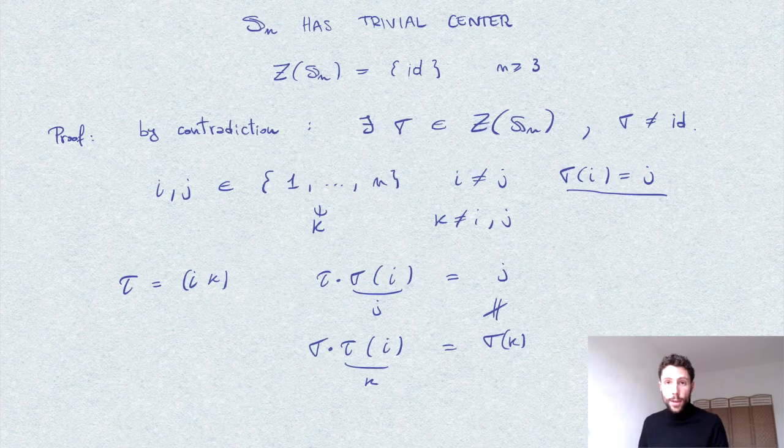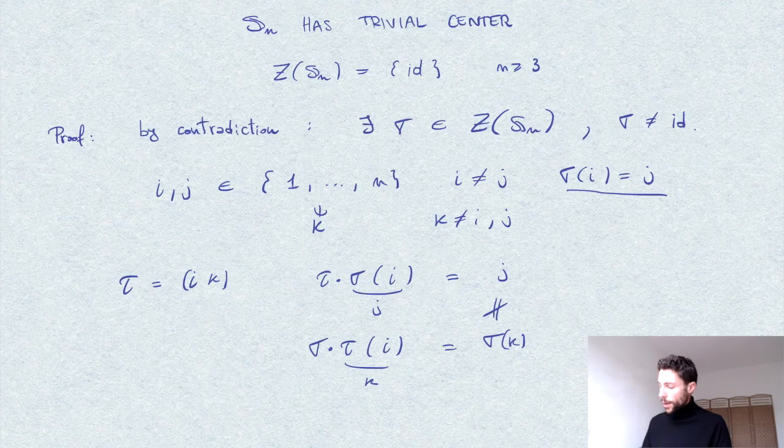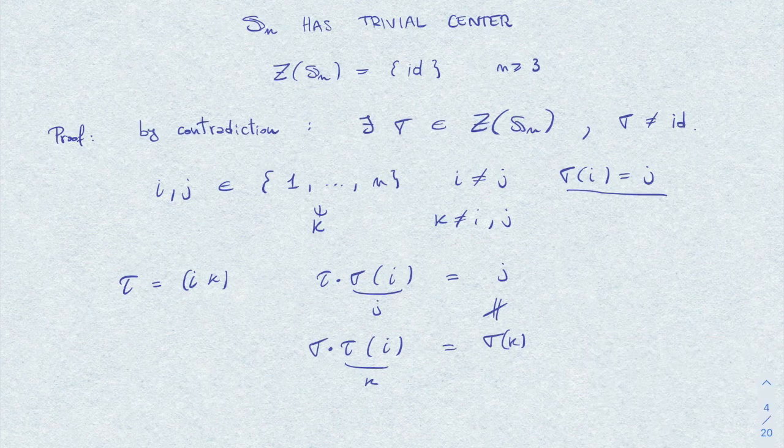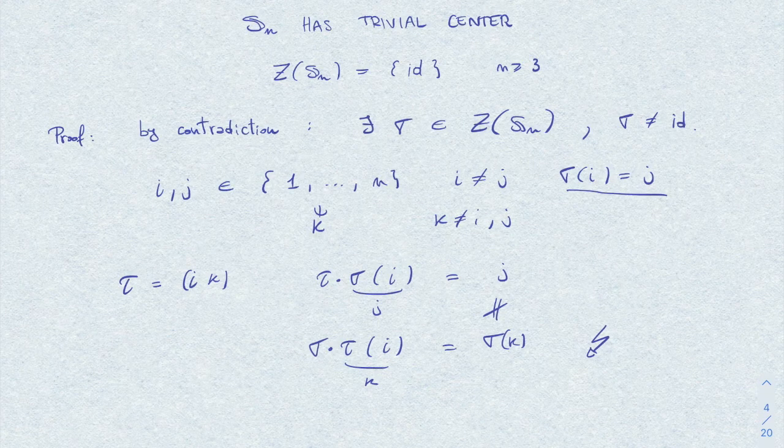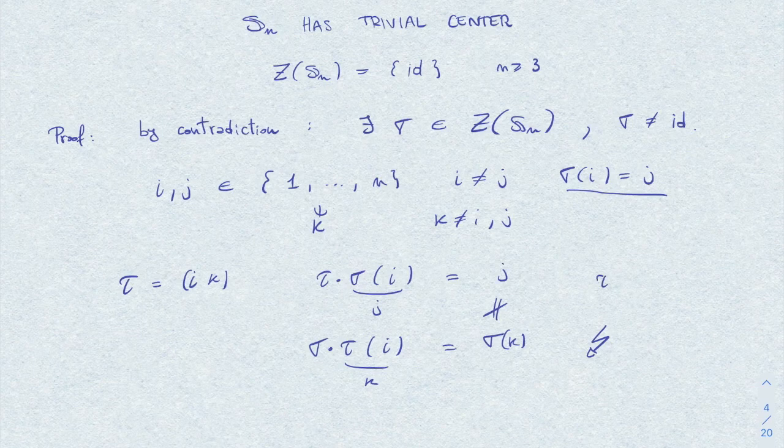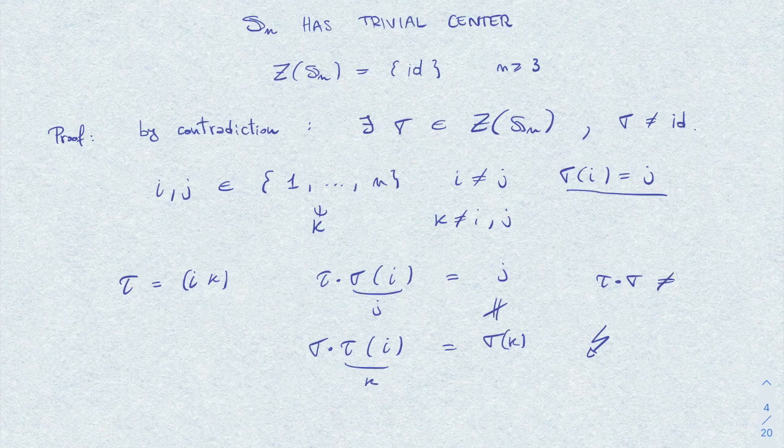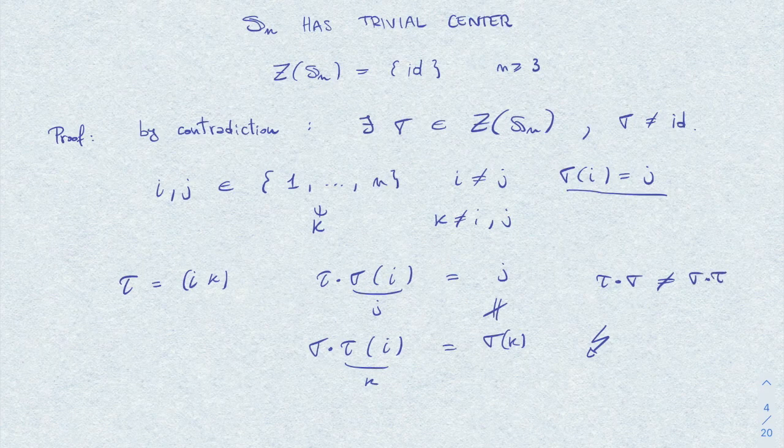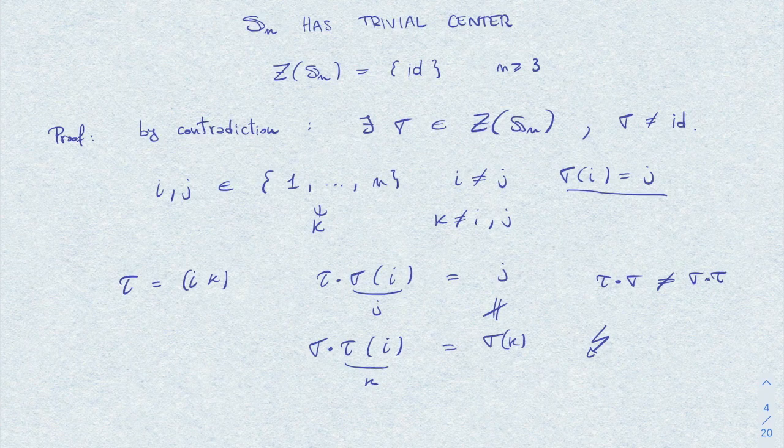So here we reached a contradiction since this simple computation just showed that the composition tau sigma is different than sigma tau, contrary to our assumption. Therefore, the only element in the center is the identity.